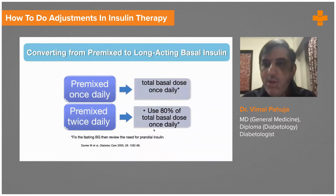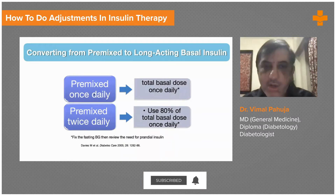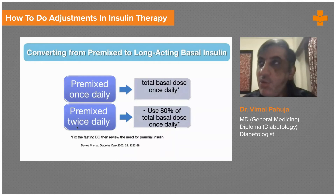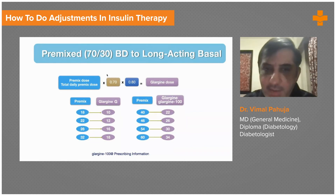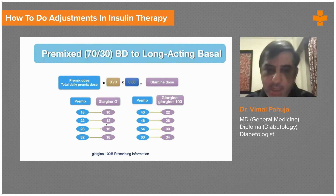When converting from pre-mix to basal insulin because sugars are not under control: if giving one pre-mix of 12 units, it becomes 12 units of basal insulin directly. If giving two pre-mixes — 12 units in the morning and 12 units in the evening, totaling 24 units — take 80 percent of that as basal insulin. This is because in 30/70 insulin, 70 percent is the long-acting component, so using 80 percent converts it appropriately. For example, 18 units of pre-mix total becomes about 10 units of long-acting; 22 units becomes about 12 units of long-acting.